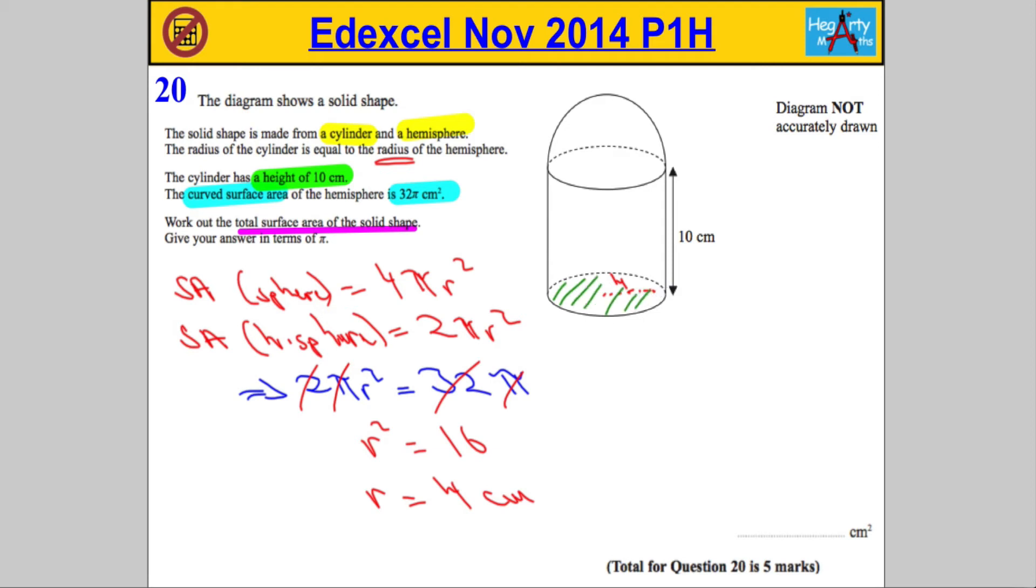Now, the base of the shape is a circle. So I'm going to say the area of the base has to be πr², π times 4², which is clearly 16π. Remember, we're leaving our answer in terms of π. Do not use 3.14. Just leave π as π.